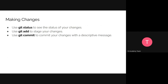For making changes: use git status to see the status of changes you've made — it shows which things have been added and which aren't being tracked. Use git add to stage changes, git commit to describe the changes you've made, and finally git push to push your changes to the remote repository.